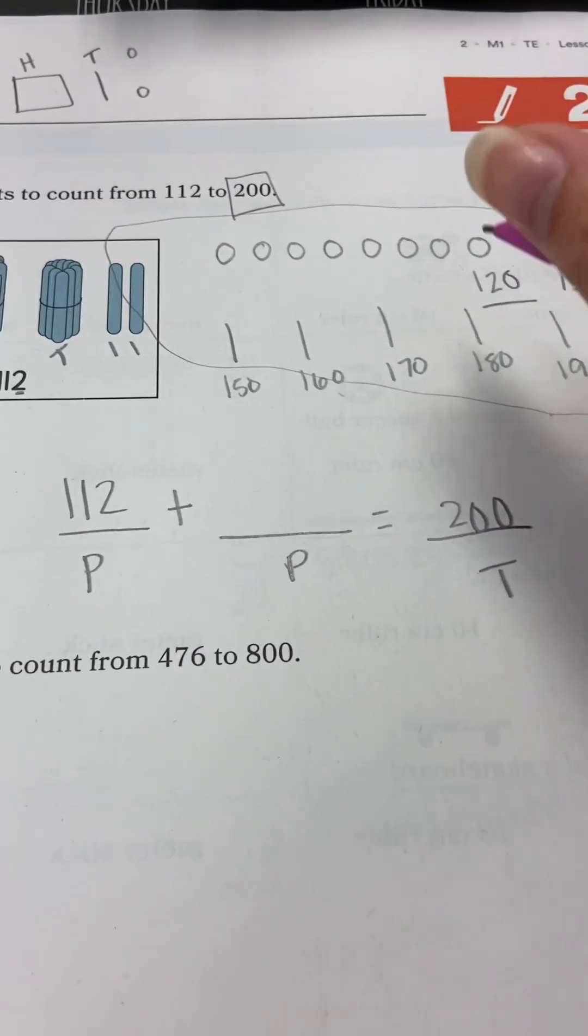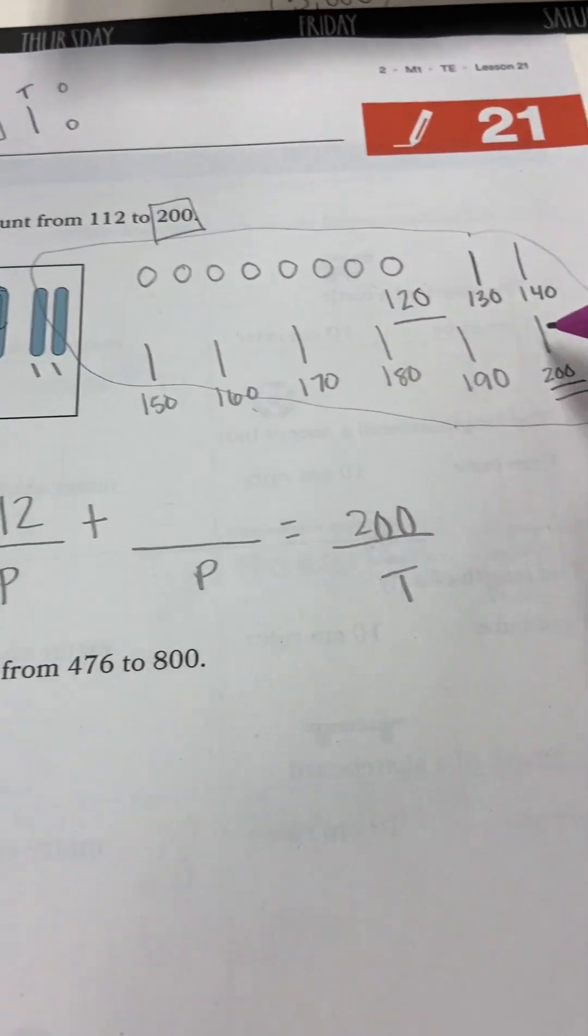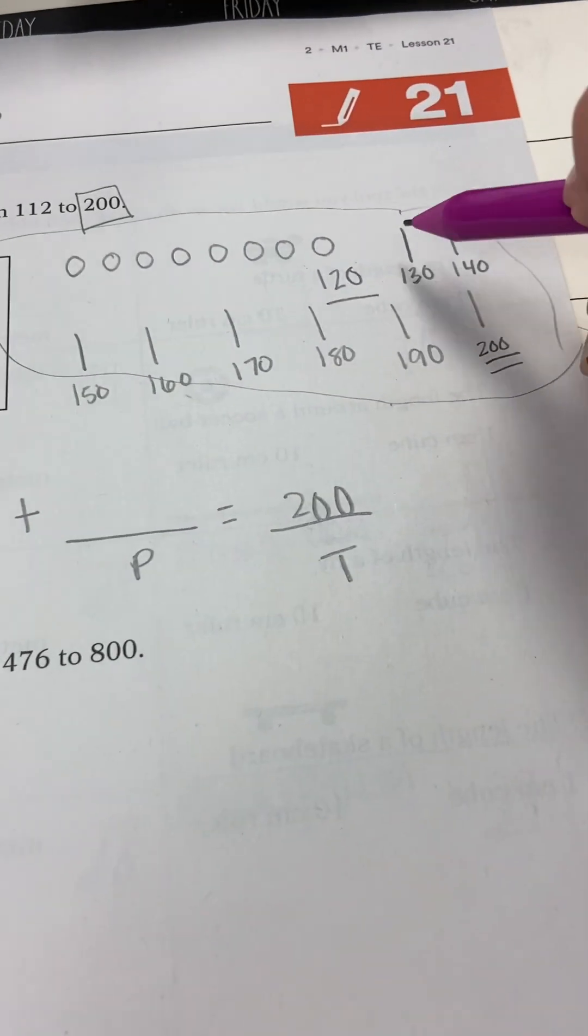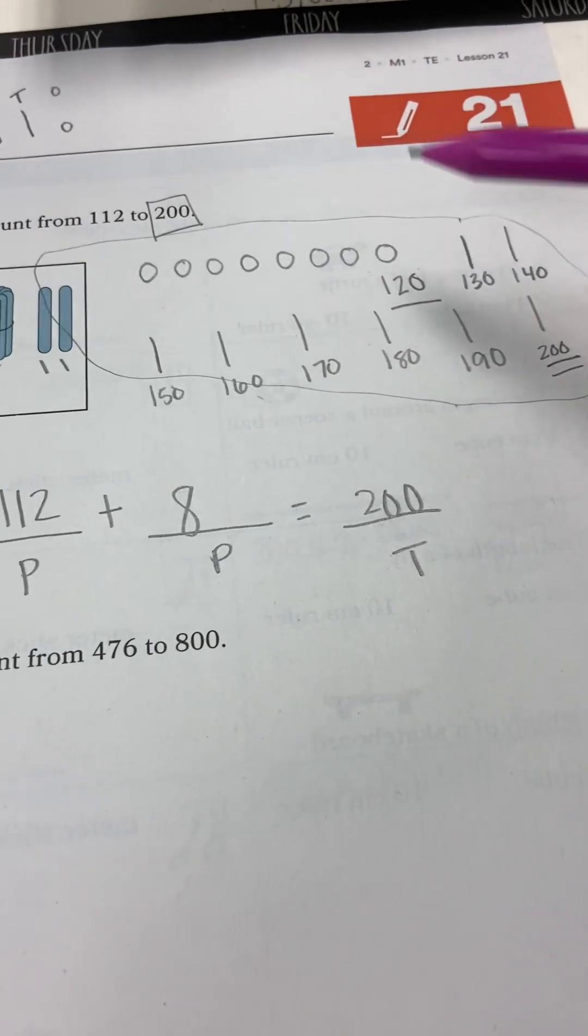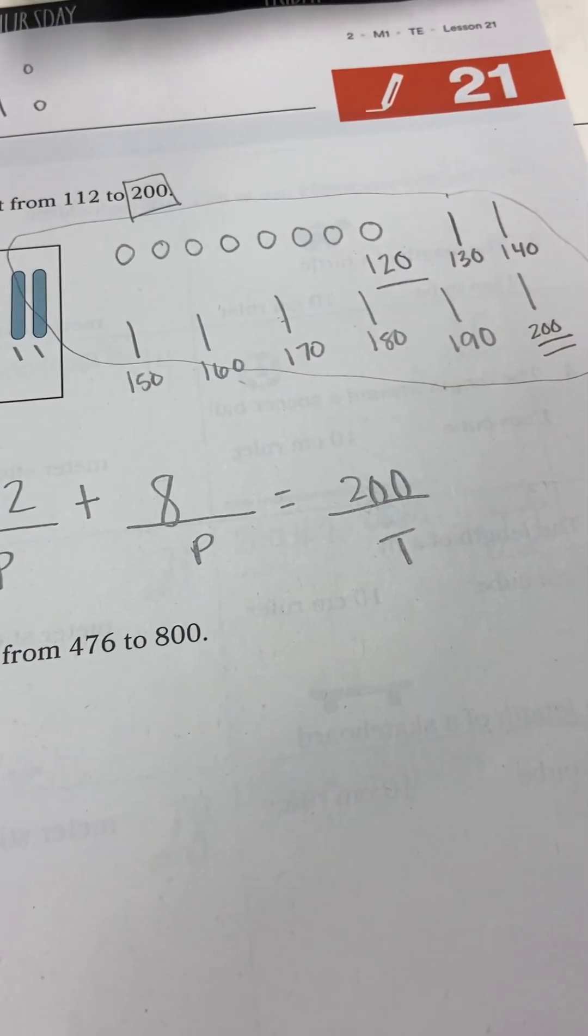So we drew pictures of tens and we drew pictures of ones. How many tens do we see? 1, 2, 3, 4, 5, 6, 7, 8. 8 tens. Again, get them to check their work. 1, 2, 3, 4, 5, 6, 7, 8. 8 tens.